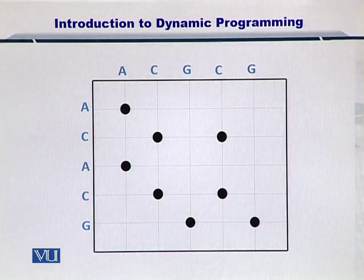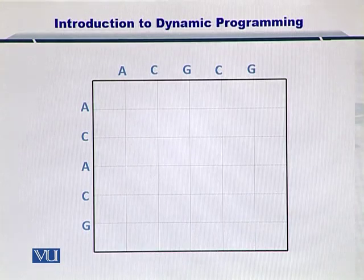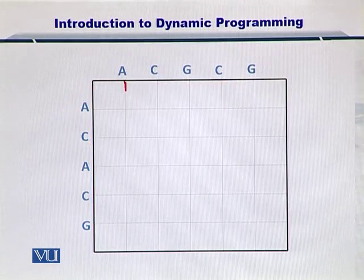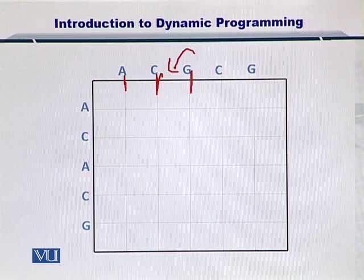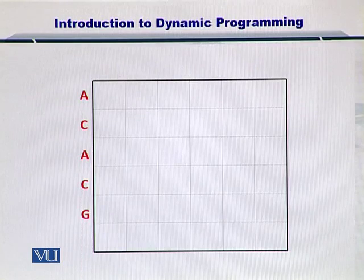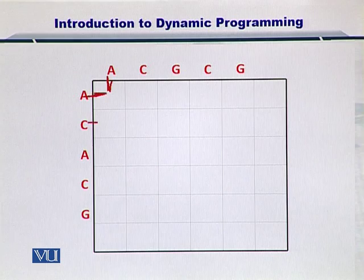This is how the dot plot was looking up till now. The first thing we need to do is get rid of the dots — I have erased all of them. As a next step, I am going to slightly shift these sequences so that they are no longer on the end of the grid, but rather placed at the center of the grid positions. The sequences A, C, A, C, G, and the other sequence which is exactly the same except one nucleotide, are now placed at the center of these grid points.